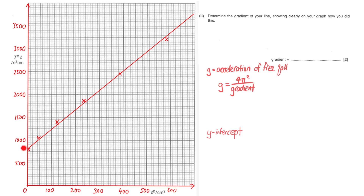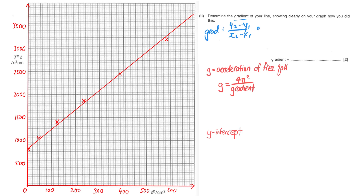Now let's take a look at the first example — it's a straight line with a constant positive gradient. The typical question asks you to determine the gradient of your line and show clearly on your graph how you get this, meaning there's some presentation required on the graph besides the usual working. Many of you will remember y2 minus y1 over x2 minus x1, and this working has to be presented in the space provided.